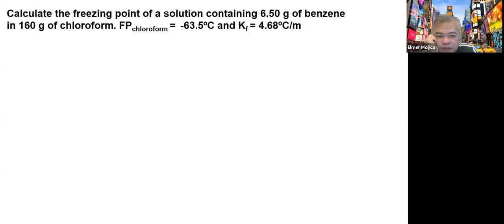In this problem, we are asked to calculate the freezing point of a solution containing 6.50 grams of benzene and 160 grams of chloroform. The freezing point of the chloroform is given as negative 63.5°C and the KF constant for chloroform is 4.68 degrees Celsius per molal.